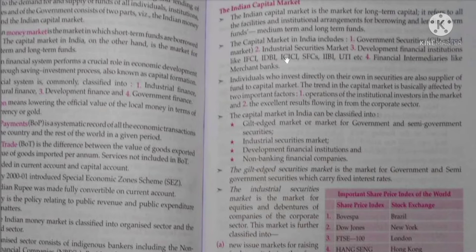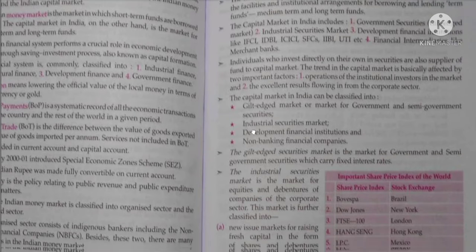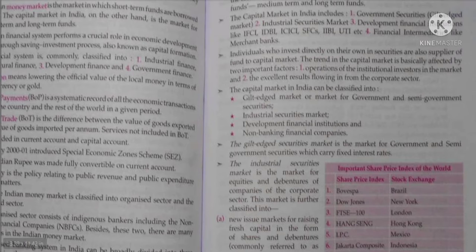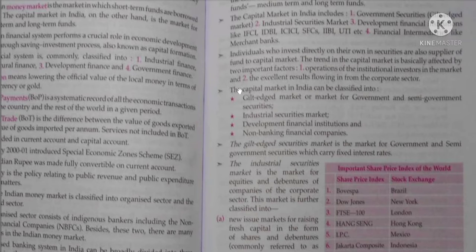Development financial institutions include IFCI, IDBI, ICICI, ISFCs, IIBI, UTI and others. Fourth are financial intermediaries like merchant banks. Individuals who invest directly in securities are also suppliers of funds to the capital market. The trend in the capital market is basically affected by two important factors: first, the operation of institutional investors in the market, and second, the excellent results flowing in from the corporate sector.